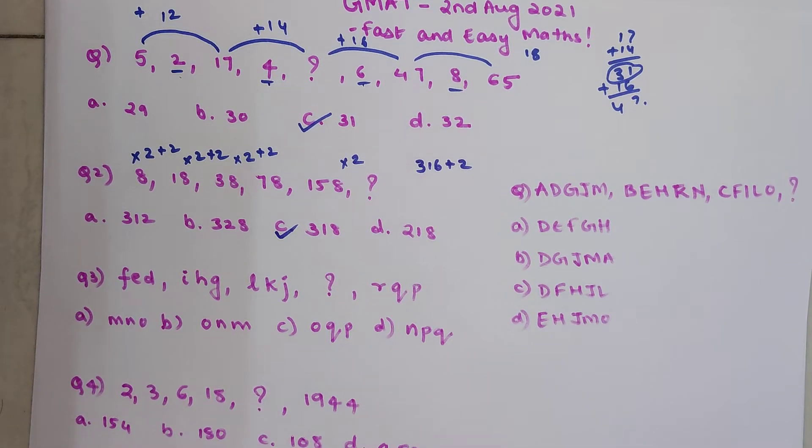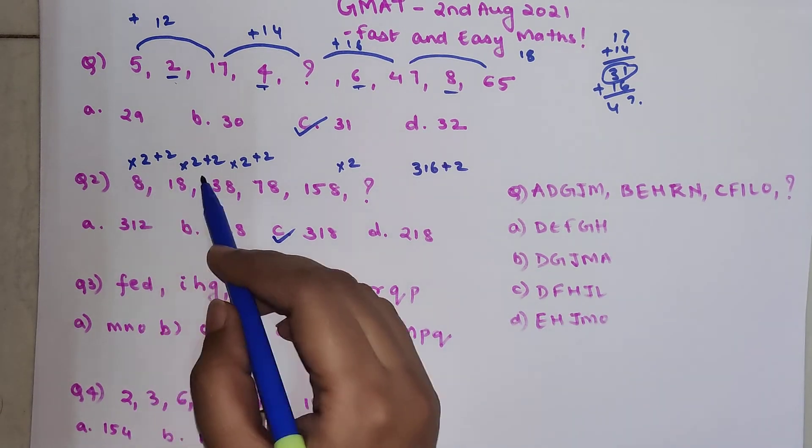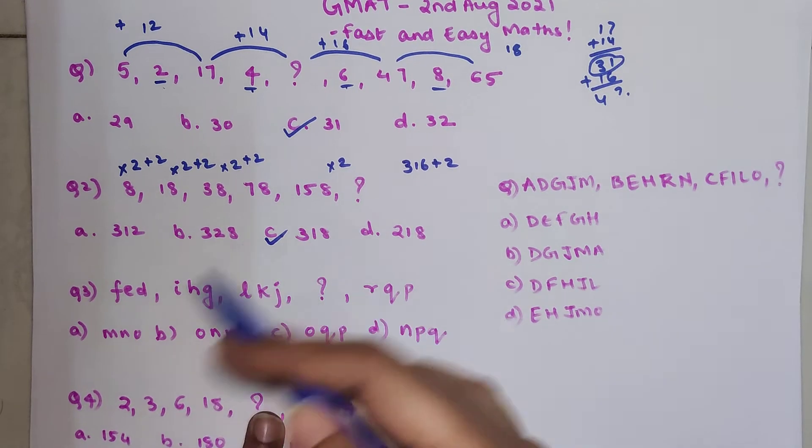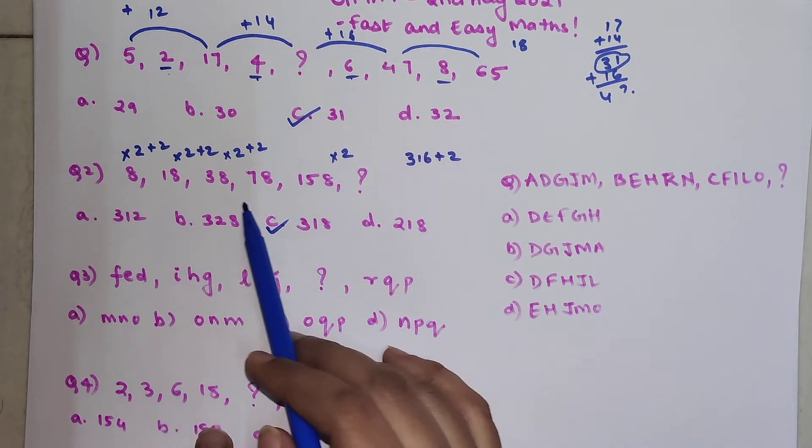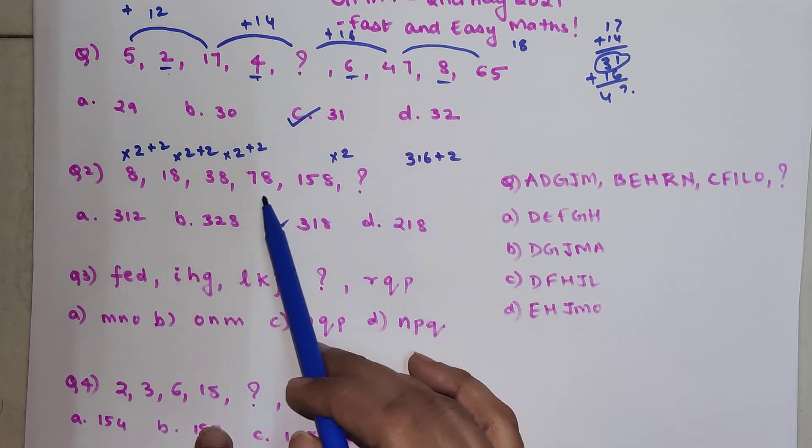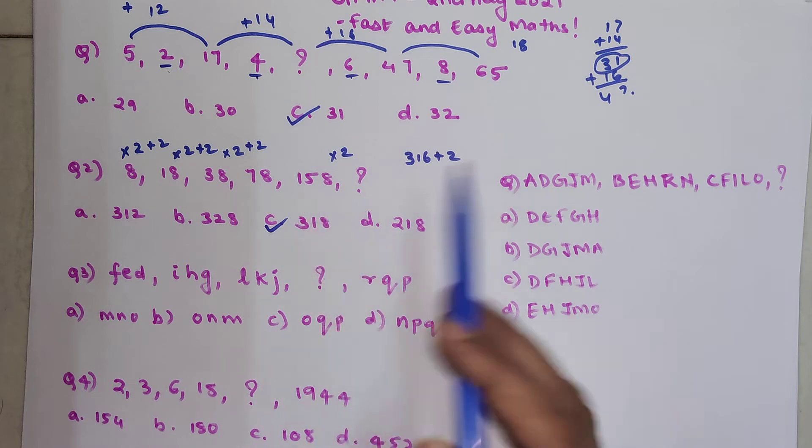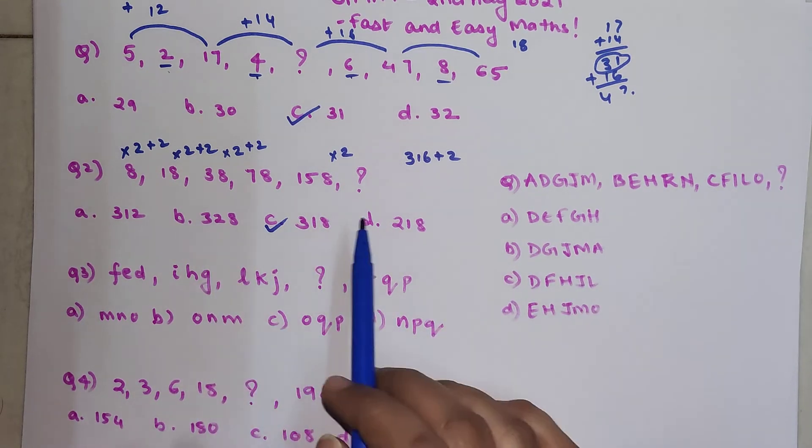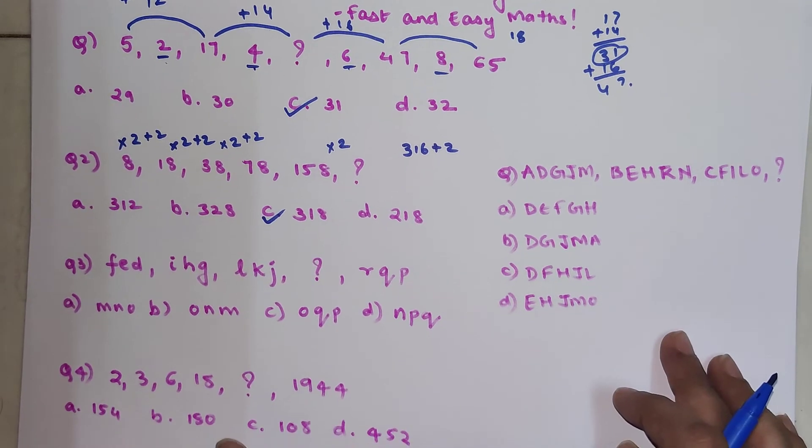Since all of these competitive exams are very time-bound, I would suggest that if you have found out the pattern in the first 2-3 things and you are really short on time, it is not necessary for you to check all the way. If you found 4 elements which are following the pattern, by default it will follow for this one as well. But if you have time, then definitely check for everyone.